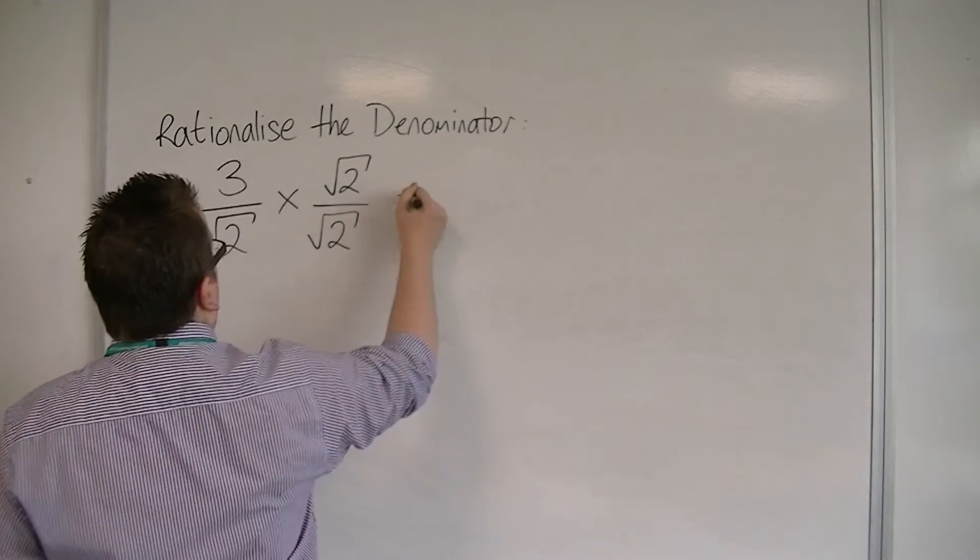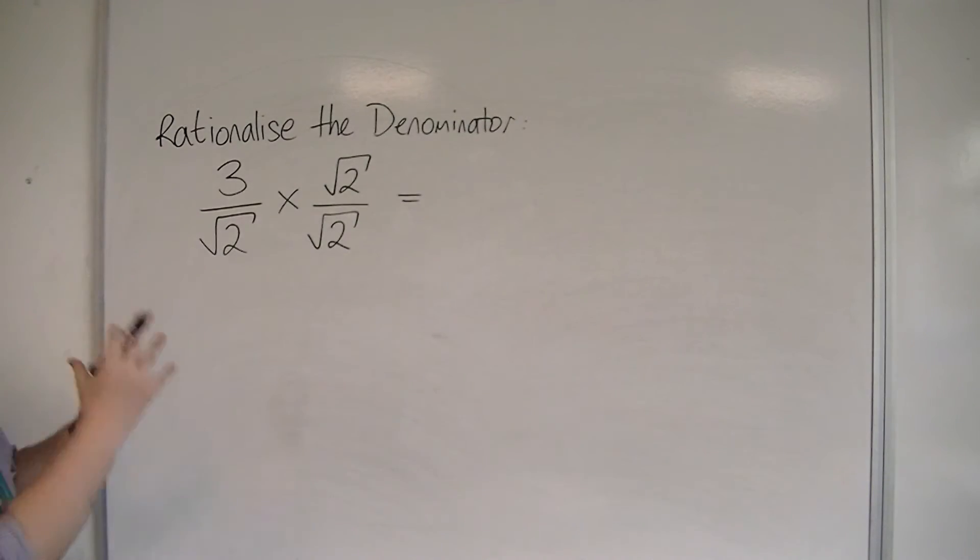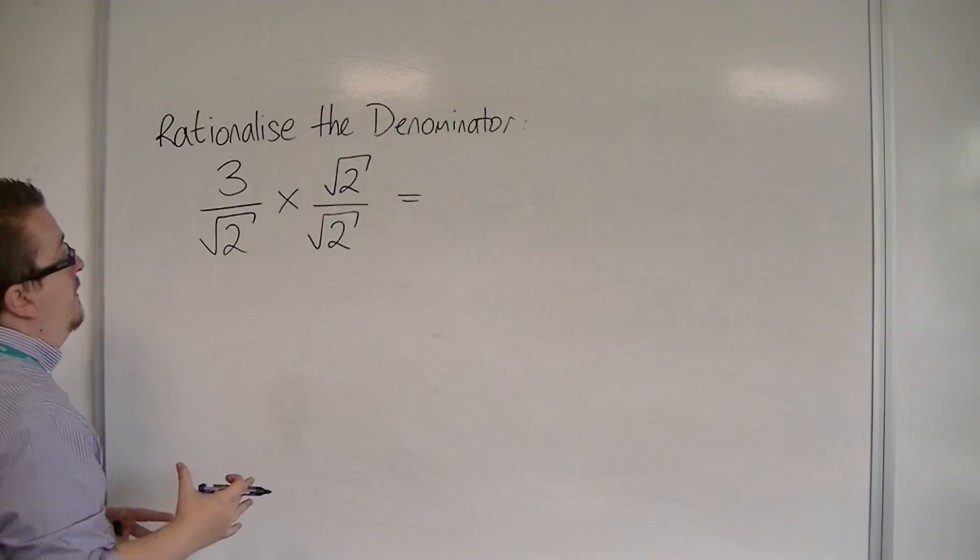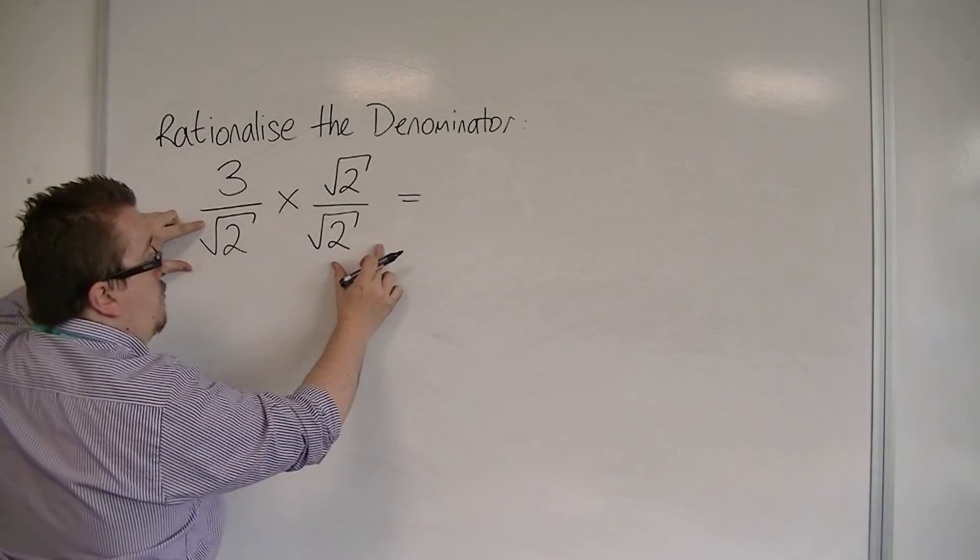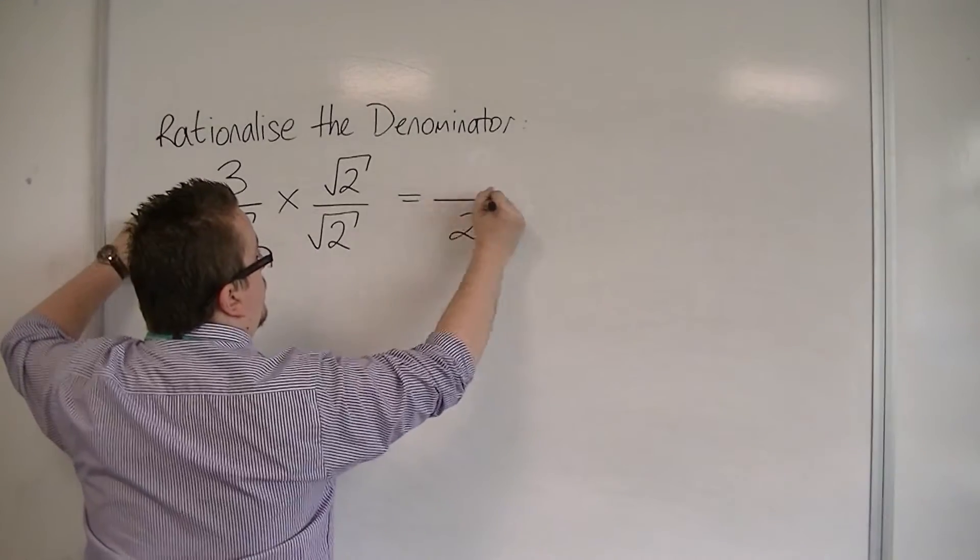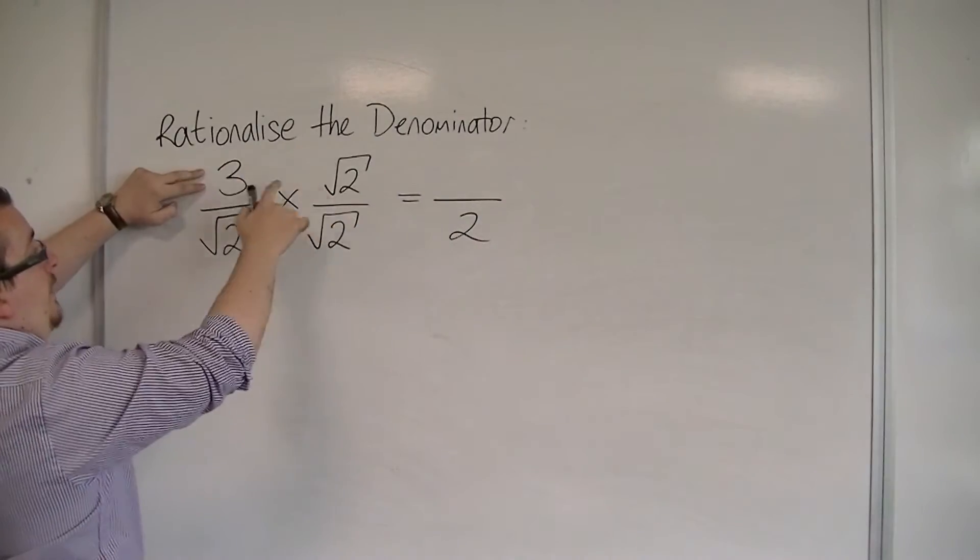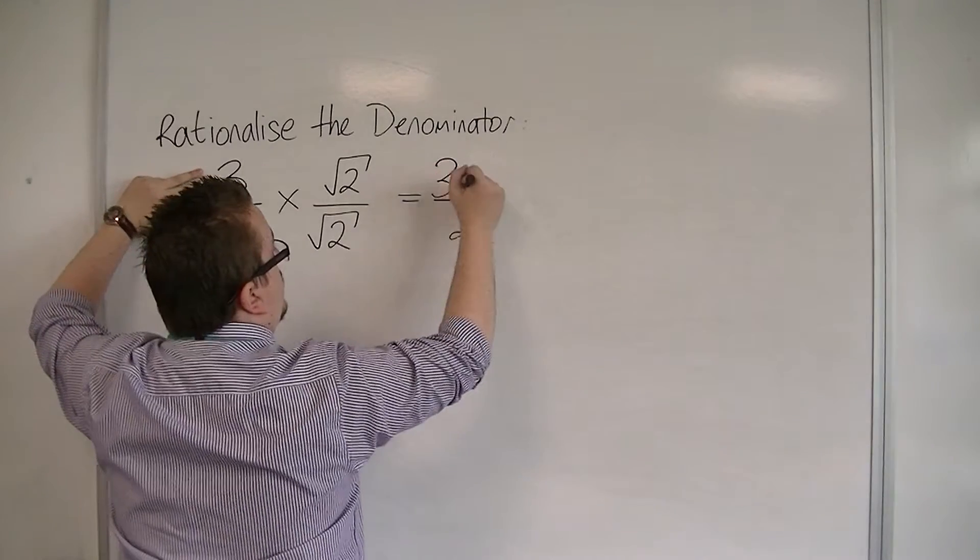But what it opens up is, if I multiply these fractions together, the denominator, root 2 times root 2, will just become 2. And on the numerator, I have 3 times root 2, which is 3 root 2.